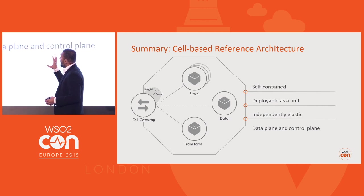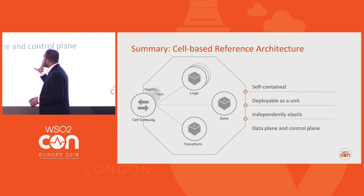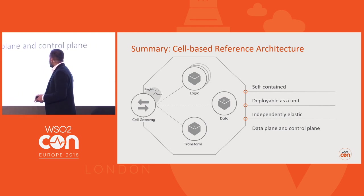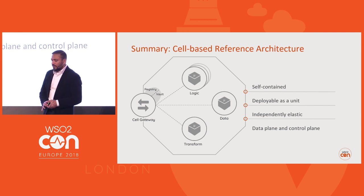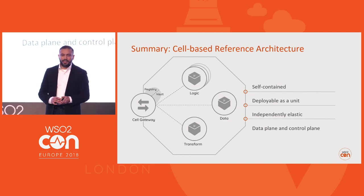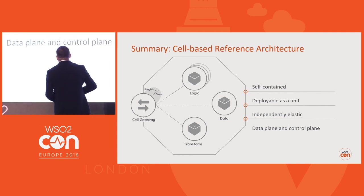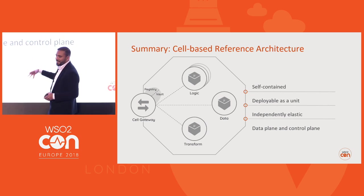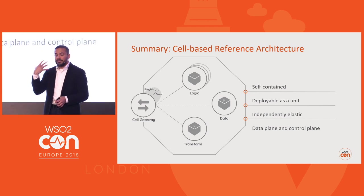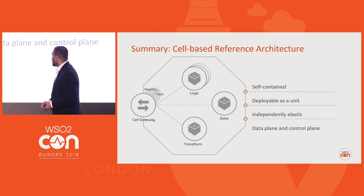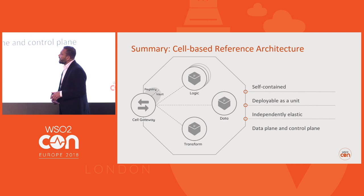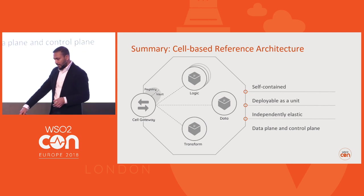In summary, in cell-based architecture: it's self-contained, you can deploy it as a unit, and you can independently scale it. There's a talk this afternoon by Afkam Aziz, our VP of Platform Architecture in the architecture track, where he'll detail how you can scale, achieve high availability, and implement cells in Kubernetes and Docker. As I explained earlier, there's a local data plane and a global data plane in this architecture to support communication.